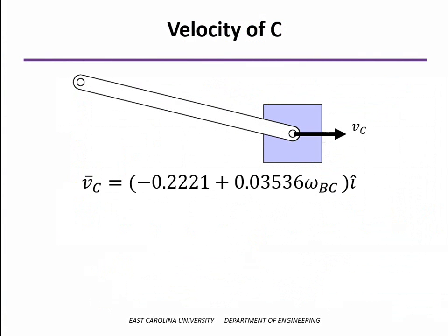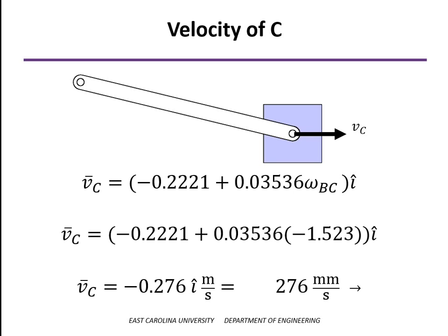Now we can plug in the value for omega in radians per second into the expression for the velocity of C, the x component. It comes out to minus 0.276i, that's 276 millimeters per second. Unfortunately, I drew the arrow in the wrong direction. The arrow is actually to the left instead of to the right.